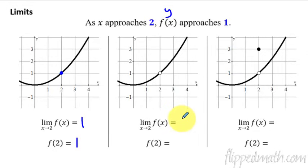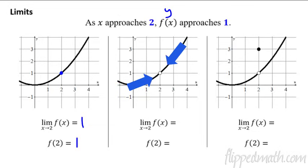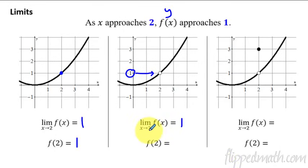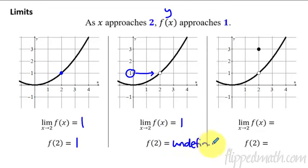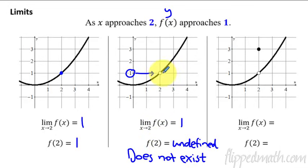For the next example, the limit as x approaches 2 — approaching from both the left side and the right side — the y value is approaching 1. So the limit of f of x as x approaches 2 is 1. Now what about f of 2? When x equals 2, what is the value of the function? There is no dot there — this one does not exist, or you can say undefined. Both would work. There is just no value of the function there since it's an open hole.